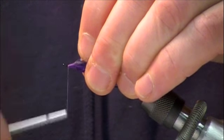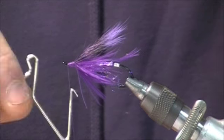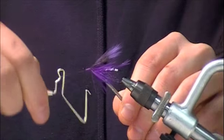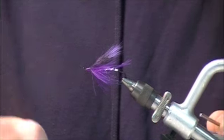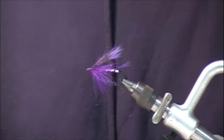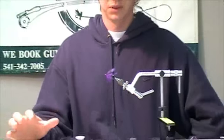Just taper that head, make it nice and even looking. And take our whip finishing tool. There you have it. A finished low water type modified purple peril.